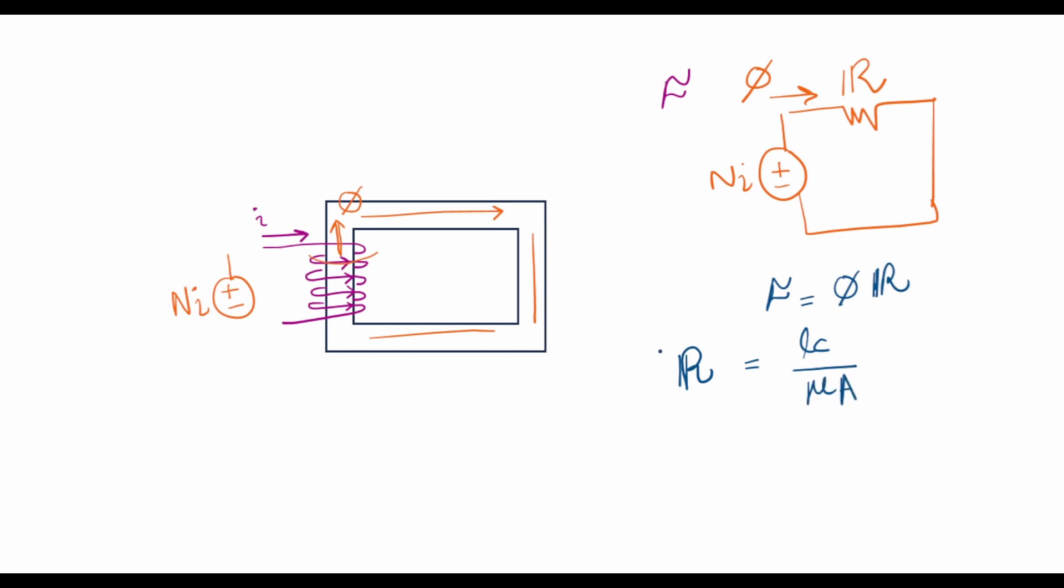This is the expression of the reluctance of a magnetic circuit and this is the equivalent of Ohm's law in magnetic circuits.